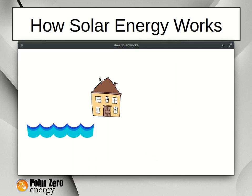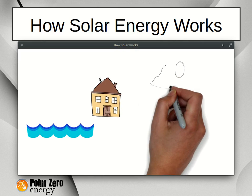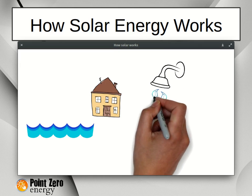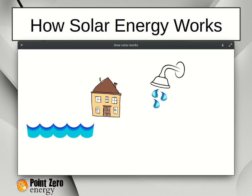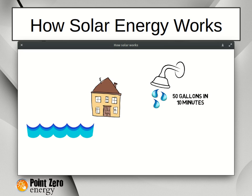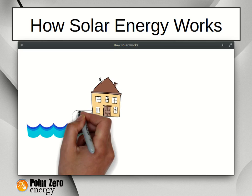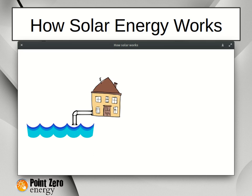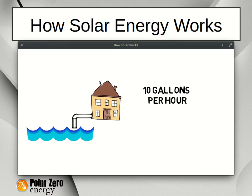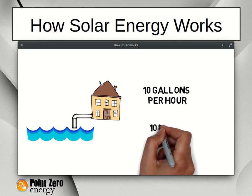Let's say you have a house on some property with a spring flowing water and you want to tap into that water to supply the needs of your home. Let's say you want to take a shower once a day — for this shower you will use 50 gallons in 10 minutes. So you tap into your spring and find that you are getting a flow rate of 10 gallons per hour.